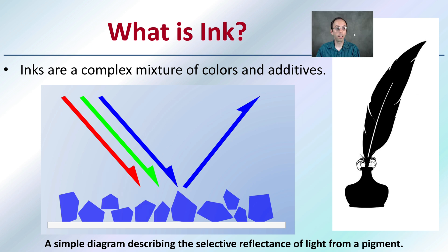What is ink? Inks are a complex mixture of colors and additives. In a simple diagram describing the selective reflectance of a pigment, we have white light with all wavelengths hitting our ink surface. It's absorbing these different colors and reflecting, in this case, the blue color — so we'll interpret that as blue ink.